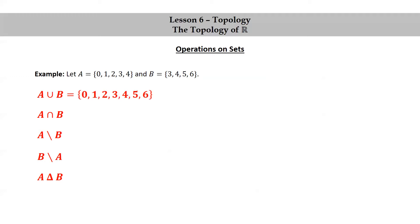The union of A and B is the set consisting of 0, 1, 2, 3, 4, 5, and 6. The intersection of A and B is the set consisting of 3 and 4. A minus B is the set consisting of 0, 1, and 2. B minus A is the set consisting of 5 and 6.